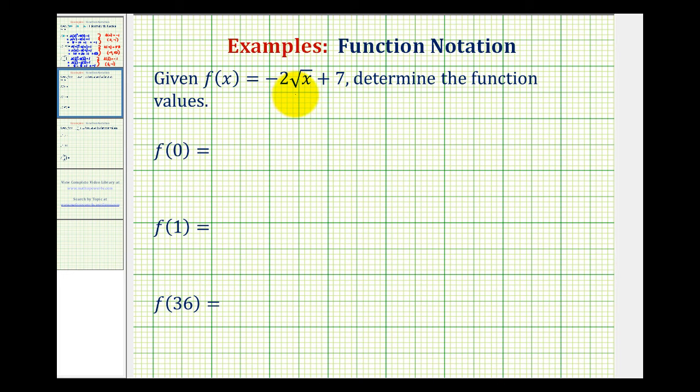Given the function f of x equals negative 2 square root of x plus 7, we want to determine the given function values. So to evaluate f of 0, notice how we've replaced x with 0 here. So to determine the function value, we'll substitute 0 for x here and then evaluate.